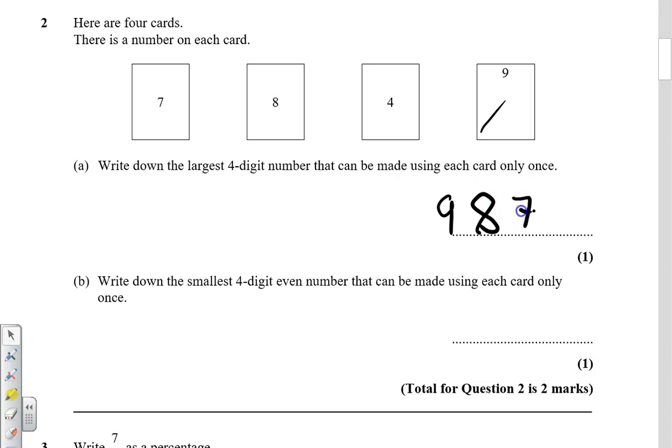Then the seven, then the four. So it's nine thousand eight hundred and seventy-four. Write down the smallest four-digit even number that could be made using each card only once. So we want the smallest even number. In other words, the smallest number needs to start with the lowest number.